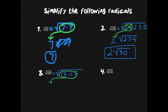In this case the number is 13. Once that pair cancels, there is nothing left inside the radical, so there is no need to write a square root. The square root of 169 is a perfect square — the final answer is 13.